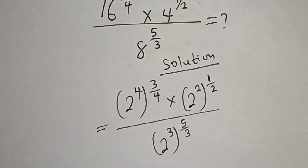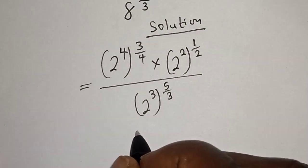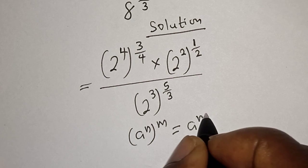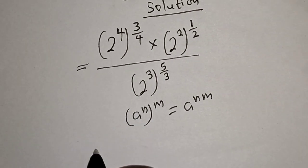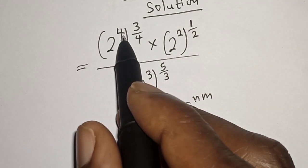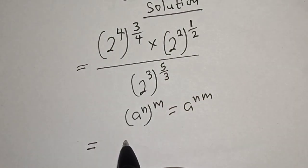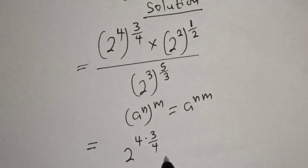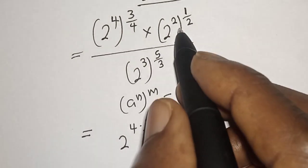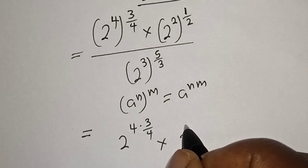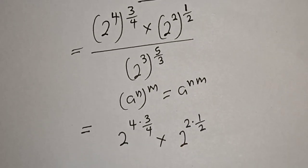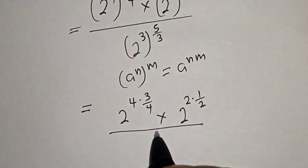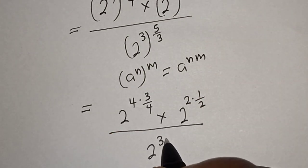Take note of this rule: a raised to power n, raised to power m, is equal to a raised to power n times m. Applying this rule, 2 raised to power 4 raised to power 3 over 4 becomes 2 raised to power 4 multiplied by 3 over 4. Then 2 raised to power 2 multiplied by 1 over 2, divided by 2 raised to power 3 multiplied by 5 over 3.